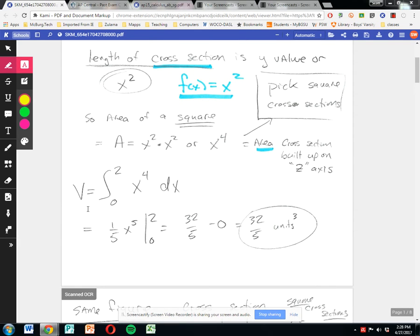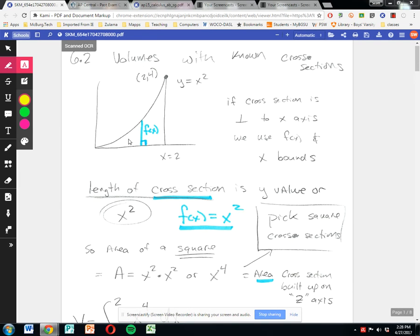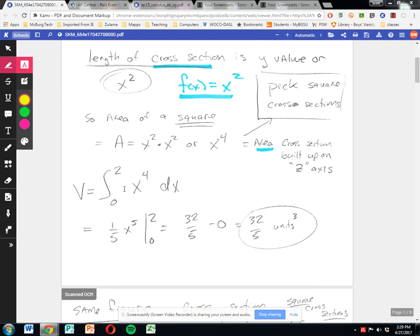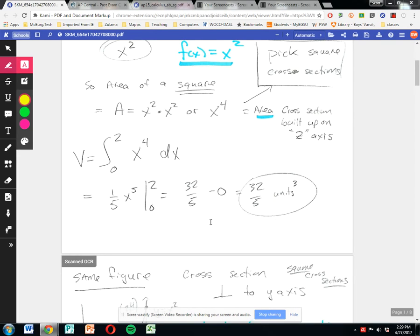If you'll take the volume of that, all you do is you say from 0 to 2 of that area of the cross-function, of the area of the cross-section, with respect to x. So volume is 0 to 2 of x-to-the-fourth dx. Go ahead and do the math set a lot from there.